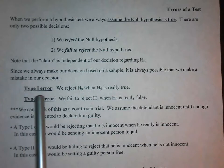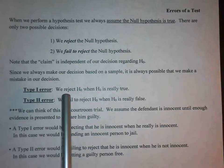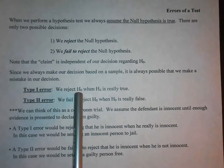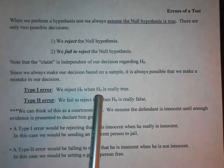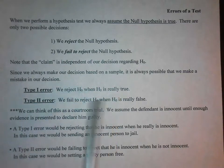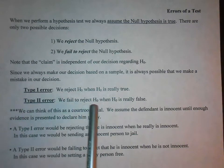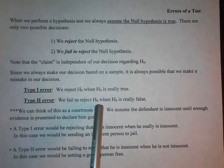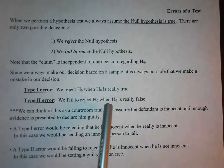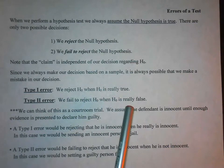A type 1 error is when we reject the null hypothesis when the null hypothesis is really true. A type 2 error is when we fail to reject the null hypothesis when the null hypothesis is really false.